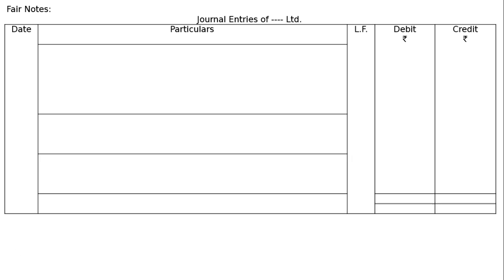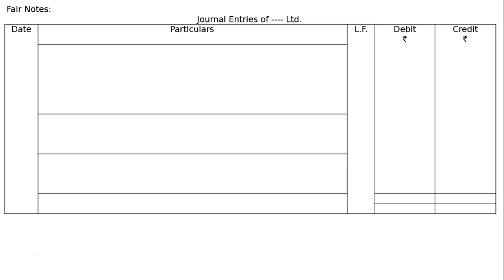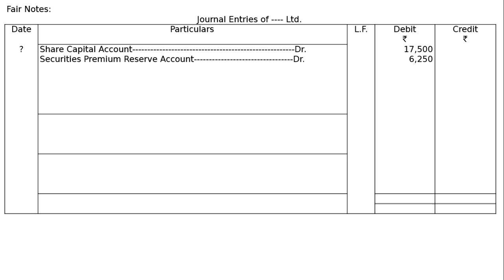Journal Entries in the books of [Company] Limited — five columns: Date, Particulars, Ledger Folio, Debit, Credit. First entry — Forfeiture of 2500 shares of Gaurav: Share Capital Account debited: 2500 × Rs. 7 (application + allotment + first call) = Rs. 17500. Securities Premium Reserve Account debited: 2500 × Rs. 2.50 = Rs. 6250 (SPR not received).